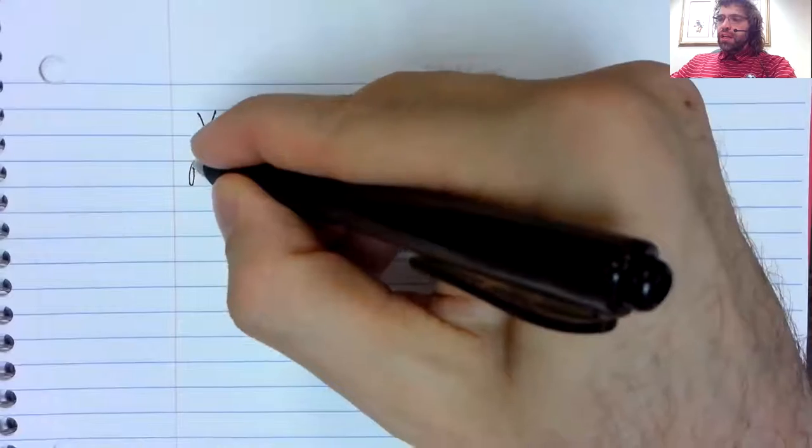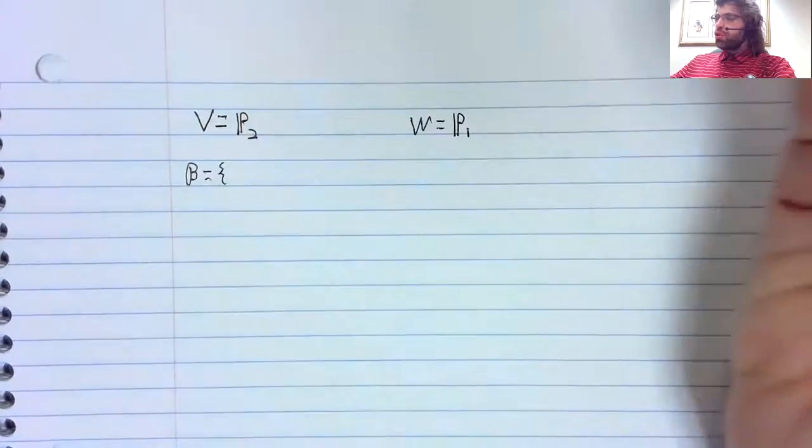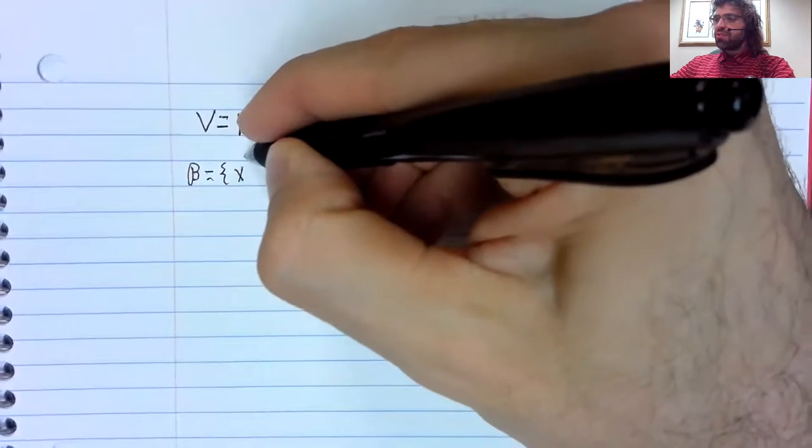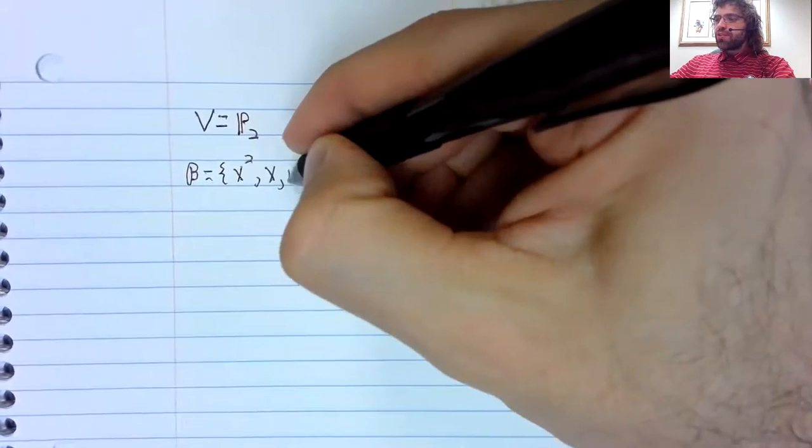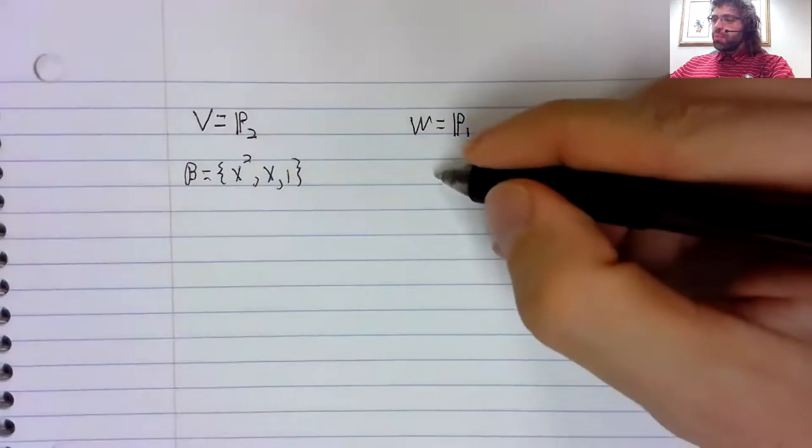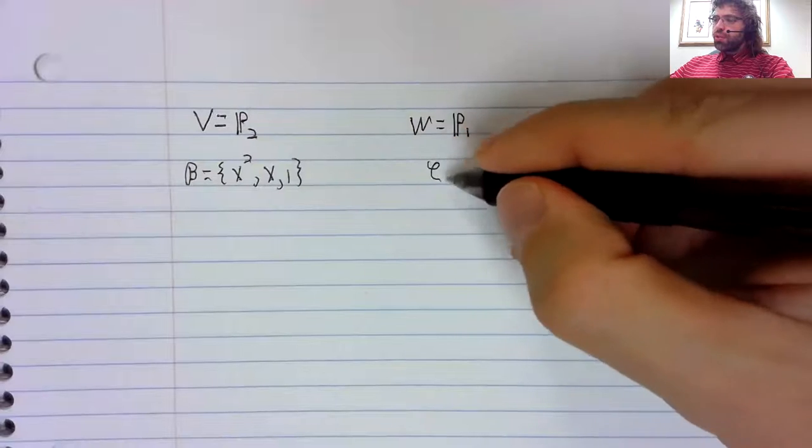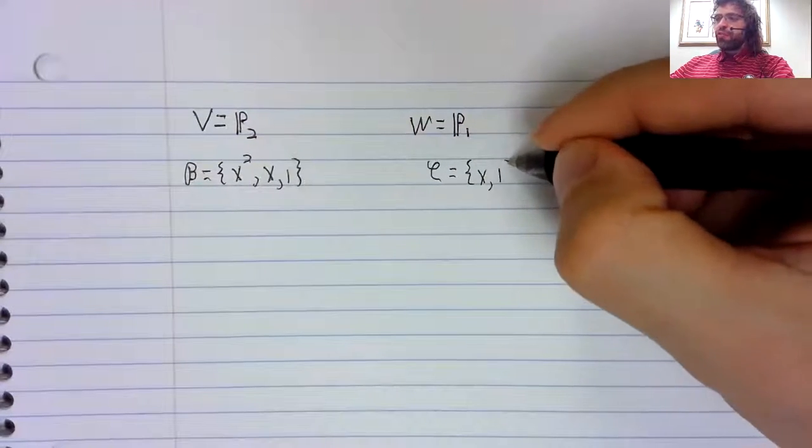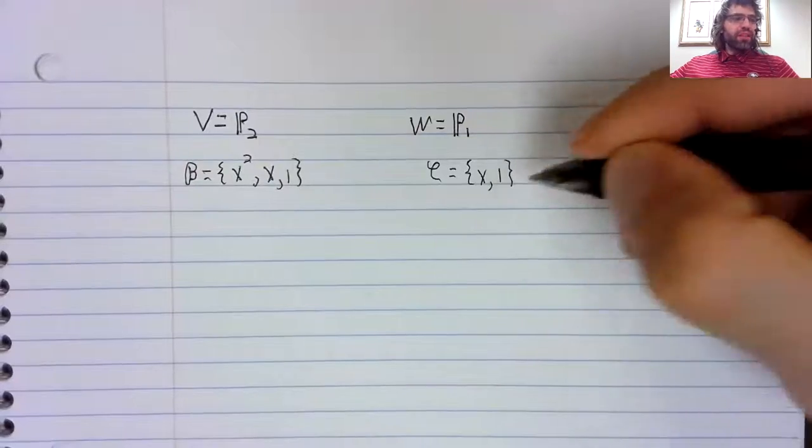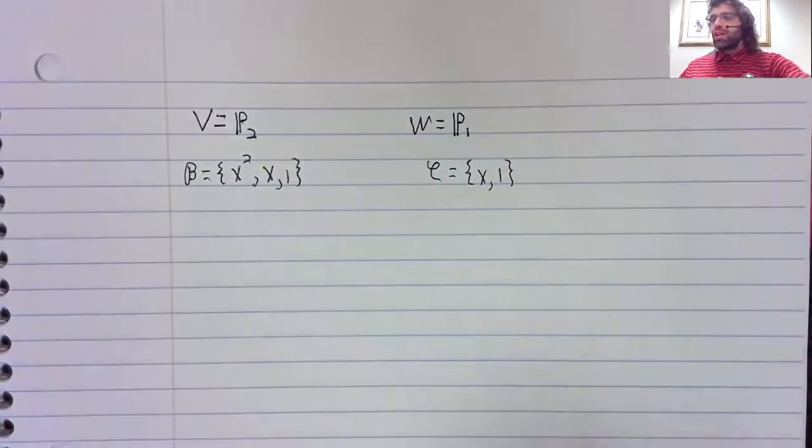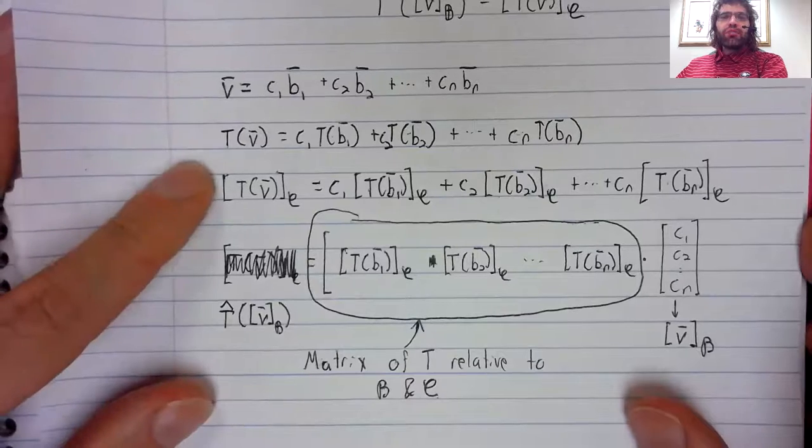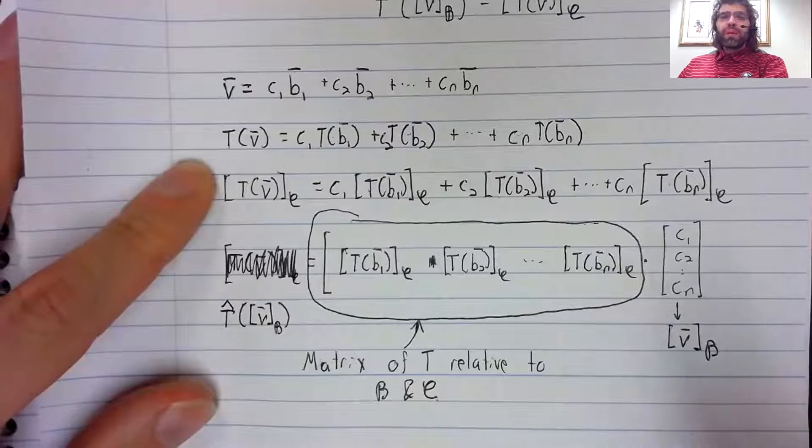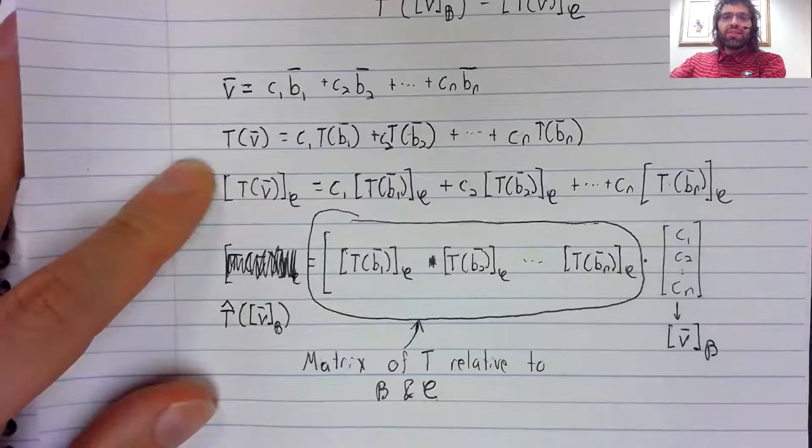And now let's say, we'll still use the standard basis, x squared, x and one. But of course, W has a different basis. And we'll find the matrix of this transformation with respect to these two bases.